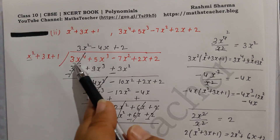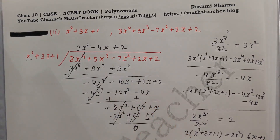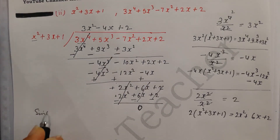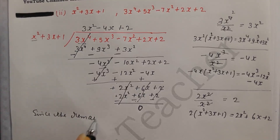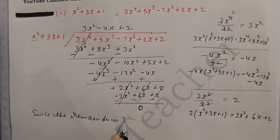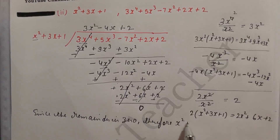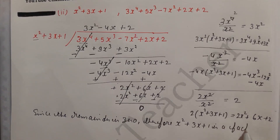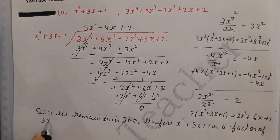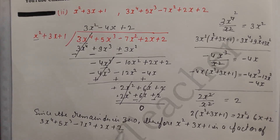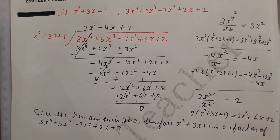After sign change and subtraction: 2x² minus 2x² is 0, 6x minus 6x is 0, and 2 minus 2 is 0. So the remainder is 0. Since the remainder is 0, therefore x² plus 3x plus 1 is a factor of 3x⁴ plus 5x³ minus 7x² plus 2x plus 2. The second part is done — it is a factor.